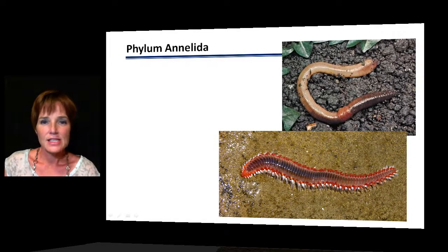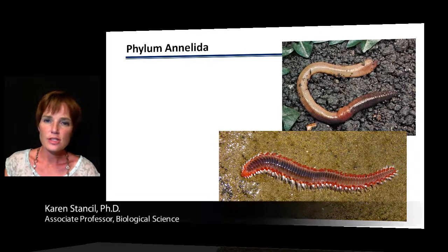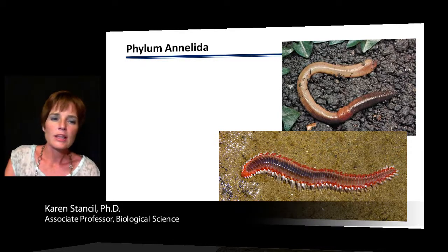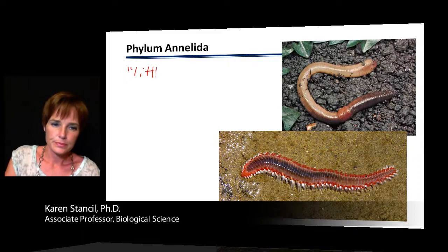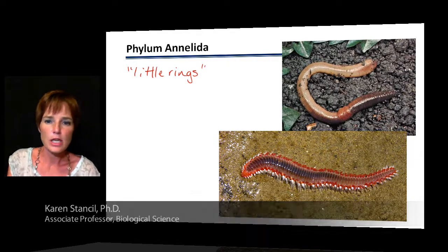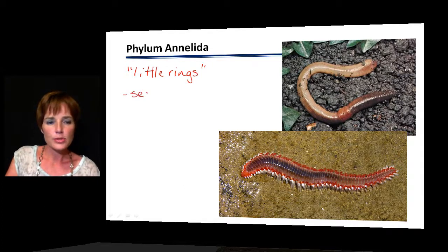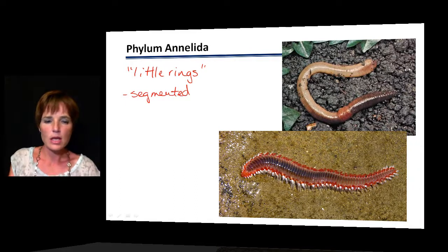Phylum Annelida is the segmented worms — our second worm phylum. The name Annelida means 'little rings,' and when you look at the body of these worms, they do appear to have little rings that encircle their bodies, dividing them up into segments.